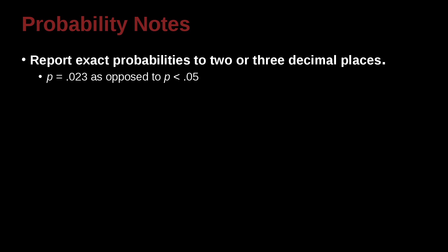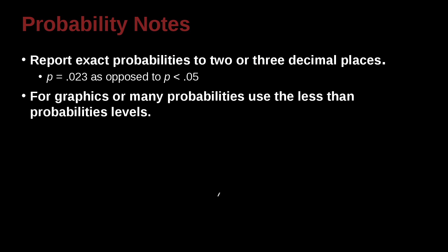If you have a graphic, a figure, or you have many probabilities, that is more than just a few, many, then in that case you can go ahead and use the P less than 0.05, 0.01, 0.001, because that makes it easier to understand. If you have too many of these probabilities listed on the page, it becomes hard to understand. Or if you're using a picture or a figure, you can just go ahead and use the simple notation.